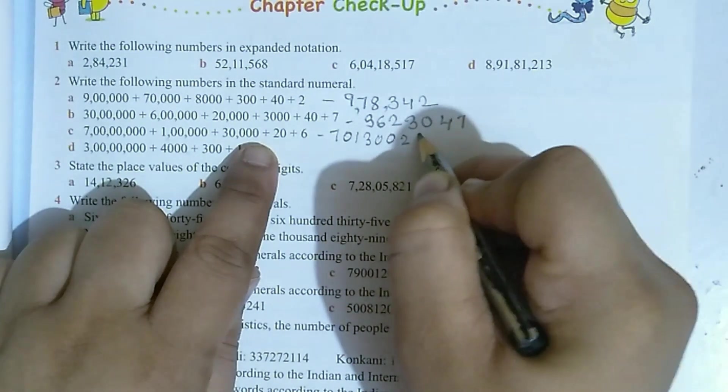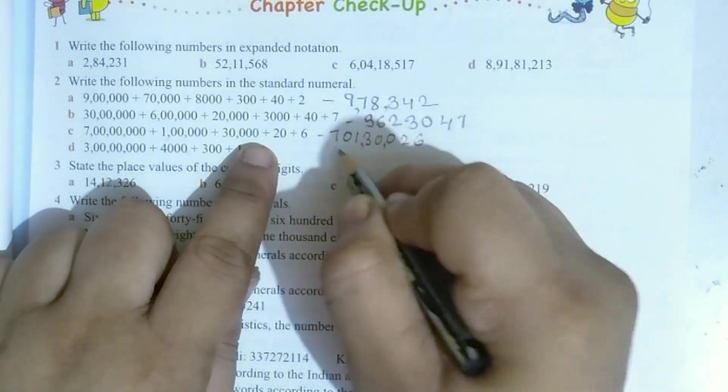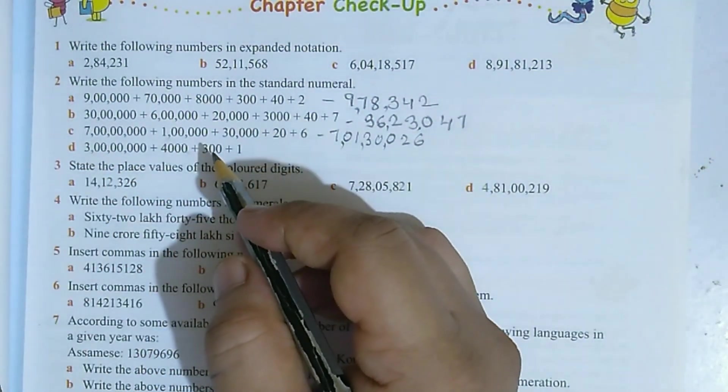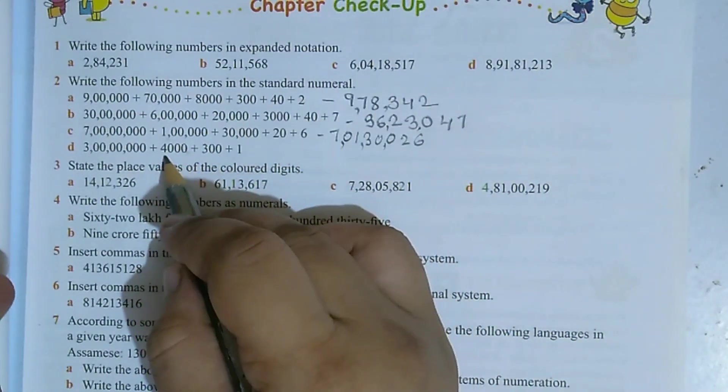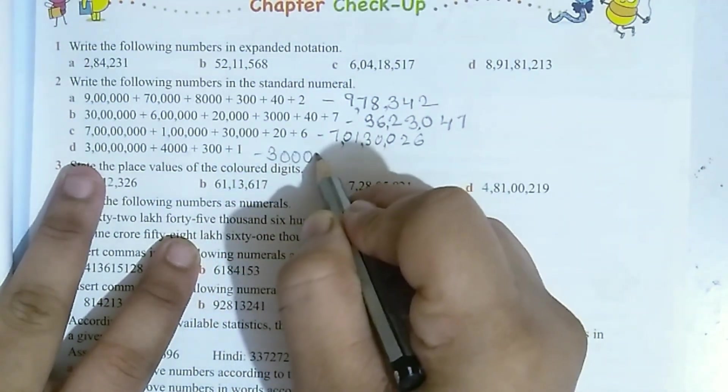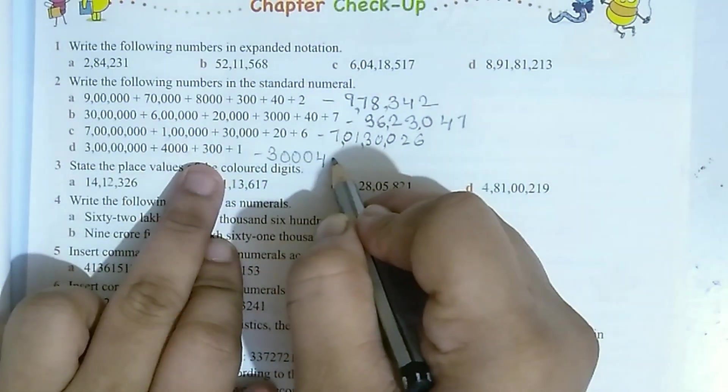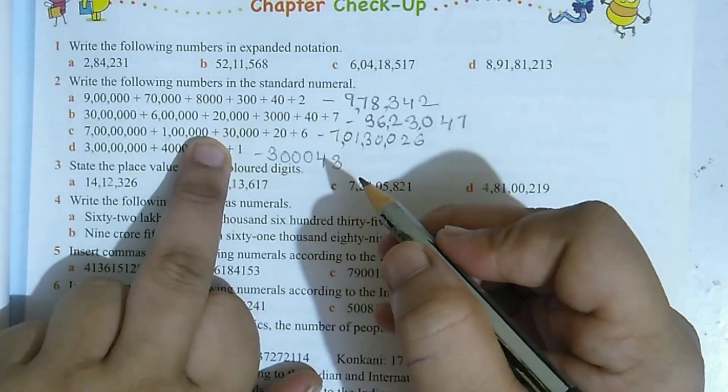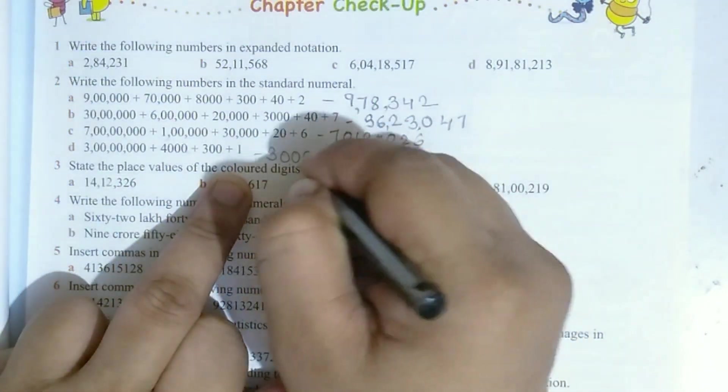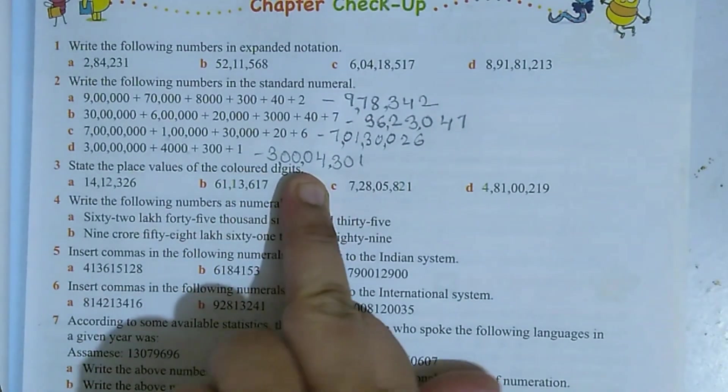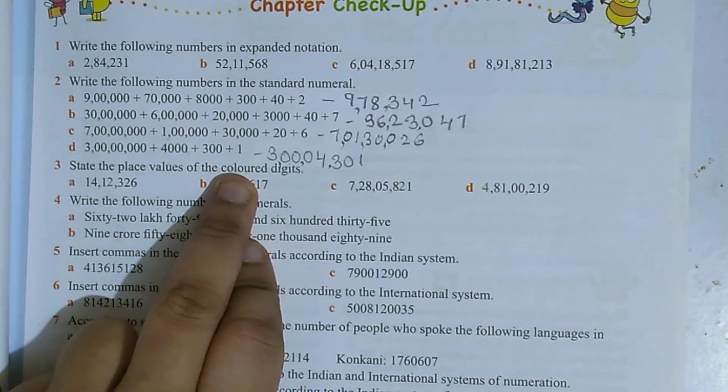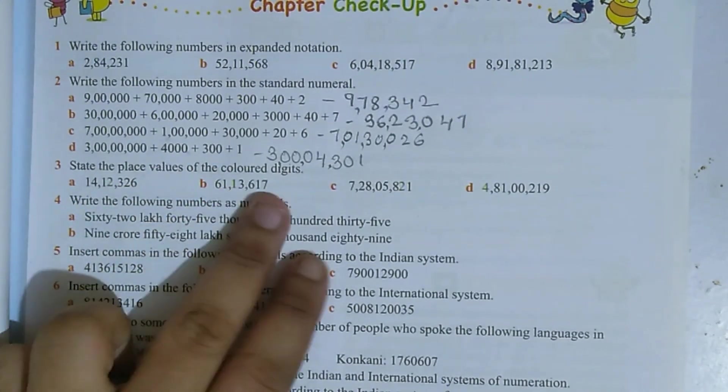Then 4 zeros, then 3 zeros, 2 zeros not there, then 1000 place will be 0. Then 2, then 6. So comma you can also put to read it easily. 70 lakhs, then 6 zeros missing, 5 zeros missing, 4 zeros missing, 3 zeros there.